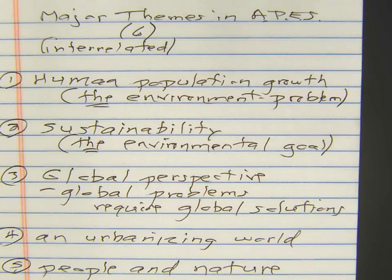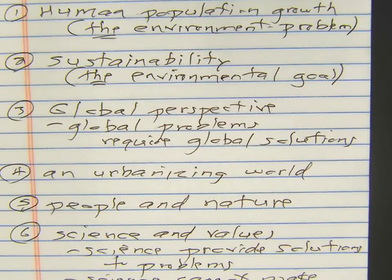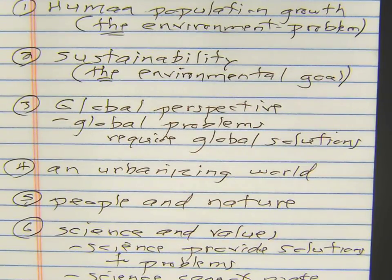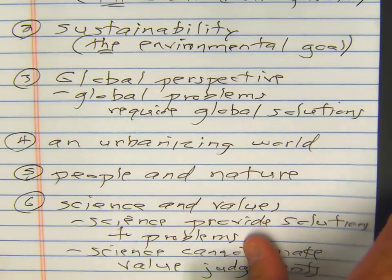We looked at human population growth, which is considered to be the environmental problem. We're going to talk about that a little bit. Sustainability — we need to look at things from a global perspective. Global problems require big-time thinking and global solutions. We'll also look at an urbanizing world, people and nature, our connection with nature, and science and values — where science can provide solutions but cannot make value judgments. We have to make the value judgments.